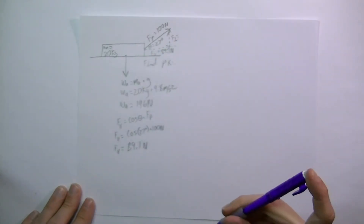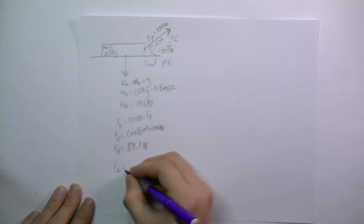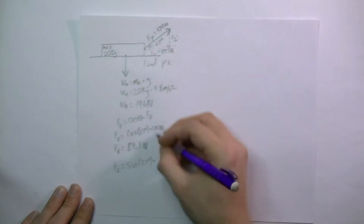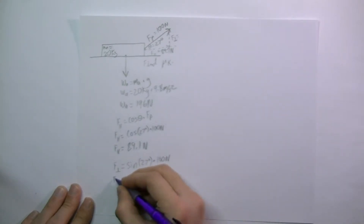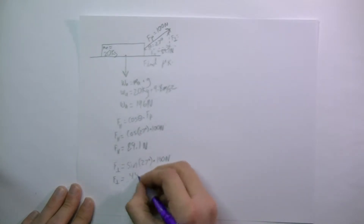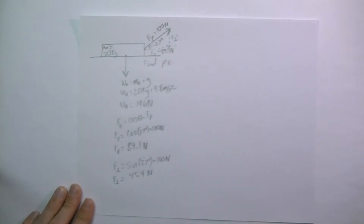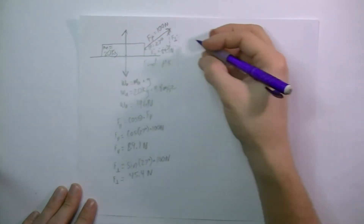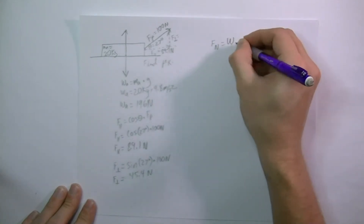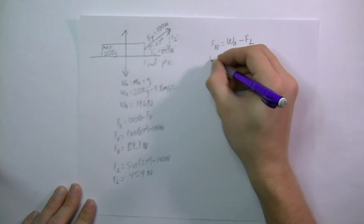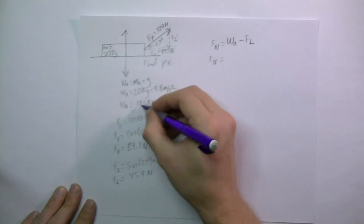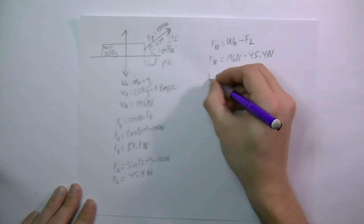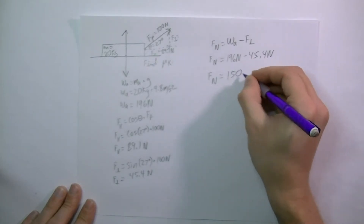For the force perpendicular, it's the opposite side of this angle, so I use the sine of 27 degrees times the hypotenuse, which is 100 newtons. For the force perpendicular I get 45.4 newtons. Since the sled has weight, it must also have a normal force, and that normal force equals the weight of the sled minus the force perpendicular. So the normal force equals 196 newtons minus 45.4 newtons, which gives 150.6 newtons.